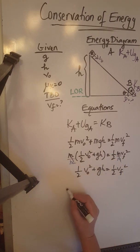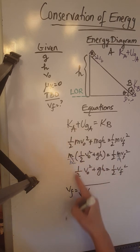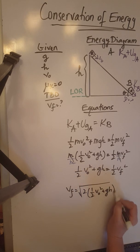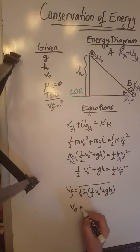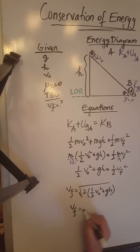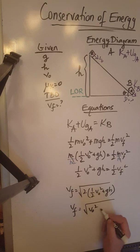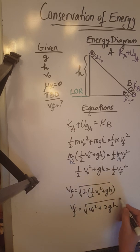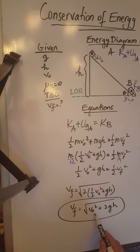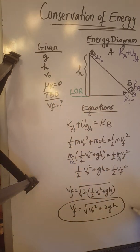To solve for Vf, we take the square root of 2 times the left-hand side of the equation — which is one-half V₀² plus gh. Distributing the 2 gives us Vf equals the square root of V₀² plus 2gh. That is our expression for Vf in terms of the given quantities V₀, g, and h. Thank you.